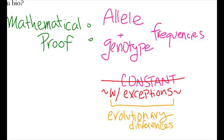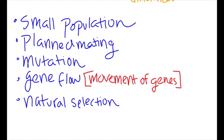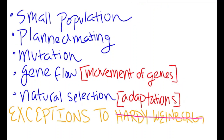So what are these evolutionary differences that cause this principle to not be applicable? Well, if there is a small population, planned mating between individuals, a mutation in an individual's gene, gene flow — the movement of individuals' genes and the genetic materials they carry to another population — or if natural selection occurs, the process whereby organisms better adapted to their environment survive and produce more offspring, then the Hardy-Weinberg Principle can no longer apply to the population.